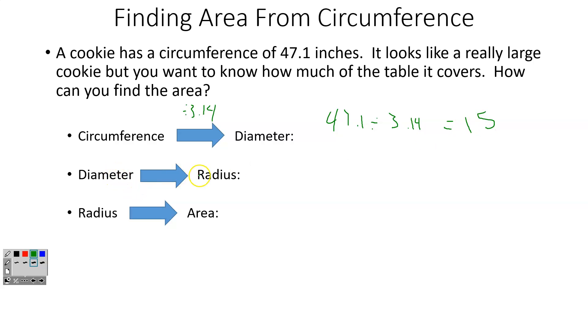Now we have to go to diameter to radius, so I'm going to divide that by 2. I'm going to do 15 divided by 2, which is 7.5. So that's my radius. So I'm going to put up here a diameter so you guys can see. I'm going to put up here a radius. So now we have to do radius to area, and that's your pi r squared. So 3.14 times 7.5 squared.